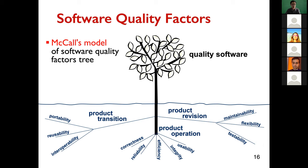In the McCall's model, there are three dimensions. The first dimension is product operation, which describes the extent to which the software fulfills its specifications. The second dimension is product revision, which describes the ability of the software to be changed. And another dimension is product transition, which describes the adaptability of the software to a new environment. These are the quality factors and they represent quality requirements we may consider for our software systems.